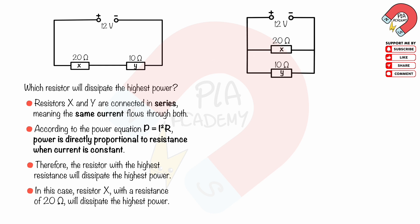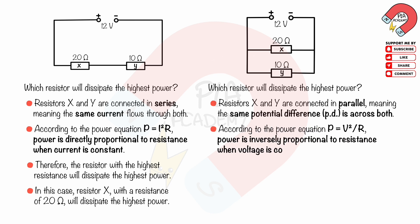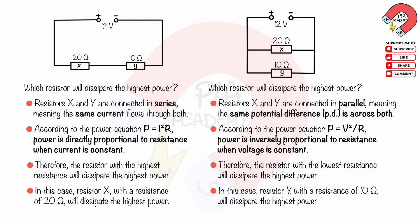Two resistors, 20 ohms and 10 ohms, are connected in parallel to a 12-volt power supply, as shown. Which resistor will dissipate the highest power? Resistors X and Y are connected in parallel, meaning the same potential difference (PD) is across both. According to P equals V squared over R, power is inversely proportional to resistance when voltage is constant. Therefore, the resistor with the lowest resistance — resistor Y at 10 ohms — will dissipate the highest power.